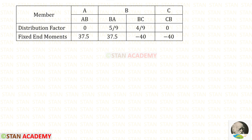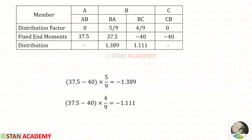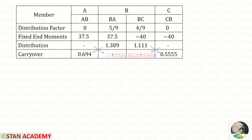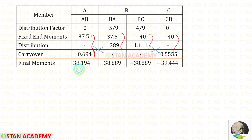Now let us start making the moment distribution table. In the table, we first enter all members, then the distribution factors, then the fixed end moments. We do the first distribution at joint B by adding the two fixed end moment values and multiplying by the distribution factors. The result is negative, so we enter it as positive. Then we do the carry-over by dividing these values and entering the answers. Since there is no remaining unbalanced moment at joint B, we cannot proceed further. We add all values to get the final moments.